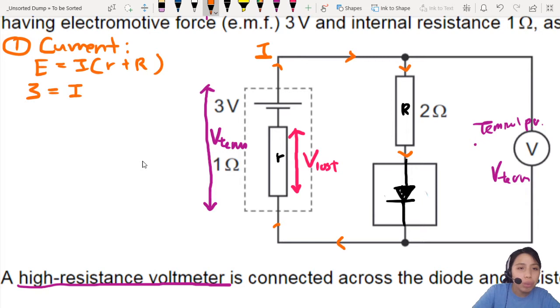So EMF is 3 volts. I, I don't know. R is 1 ohm. Big R, 2 ohm. So that will give me a current of 1.0 amps. So I have found current.